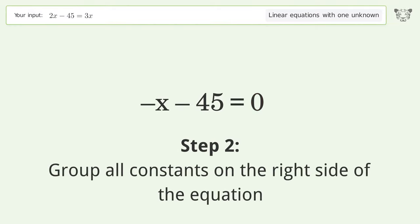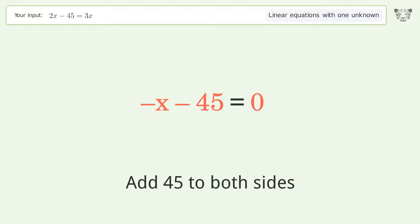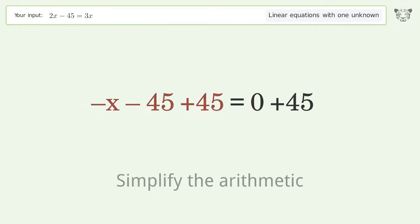Group all constants on the right side of the equation. Add 45 to both sides. Simplify the arithmetic.